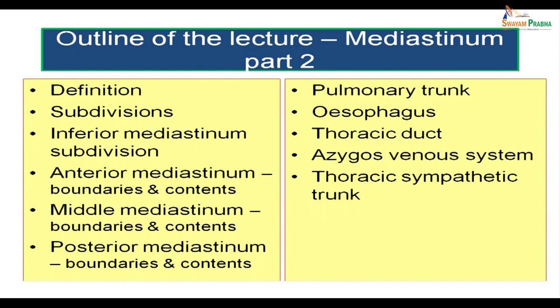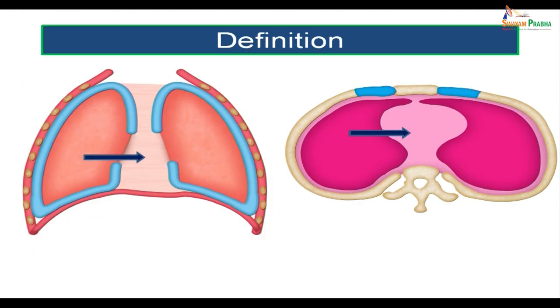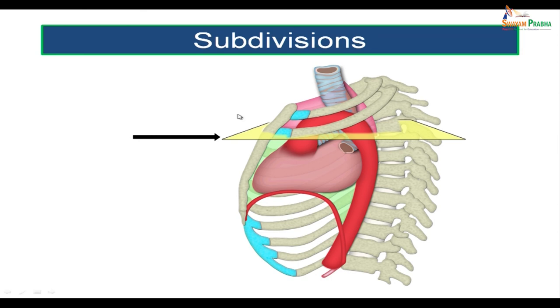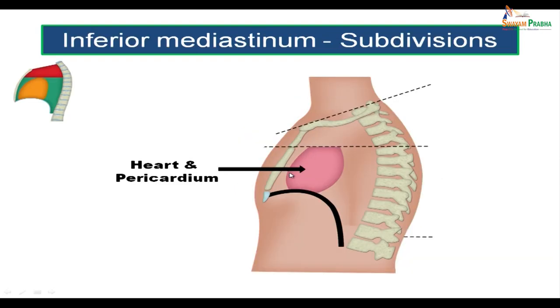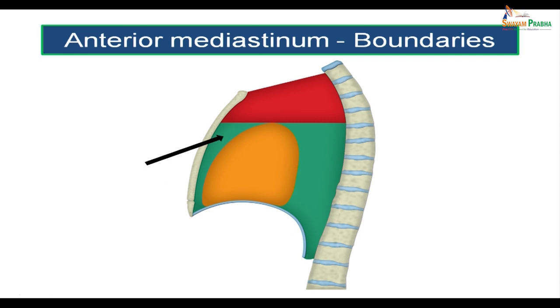Mediastinum is the middle septum present in the thoracic cavity, bounded on either side by the mediastinal pleura. An imaginary plane divides it into a superior mediastinum and inferior mediastinum. The inferior mediastinum contains the heart and pericardium, which further divides it into anterior, middle, and posterior mediastinum.